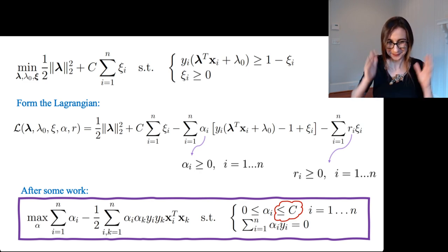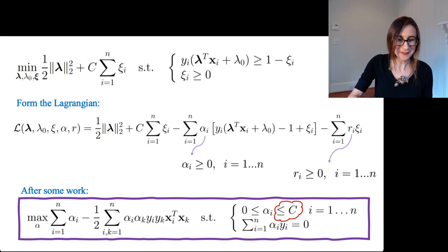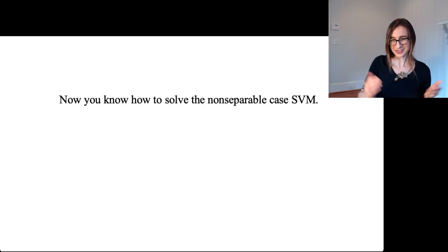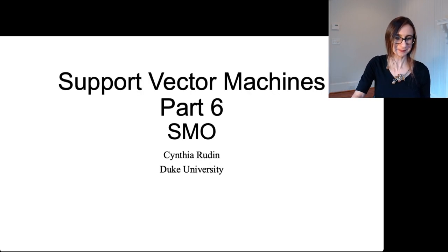All right, cool. So you got it. The only thing I need to tell you is you're probably wondering where the r's went. Well, as it turns out, one of the KKT conditions gives you that the r_i's are just C minus alpha_i. So if you get the alphas, you automatically can get the r's the same way that you automatically can get the lambdas. So you actually, this is actually the main dual quadratic program that you need to solve in order to get everything. Okay, so now you know how to solve the non separable case SVM. Thank you.